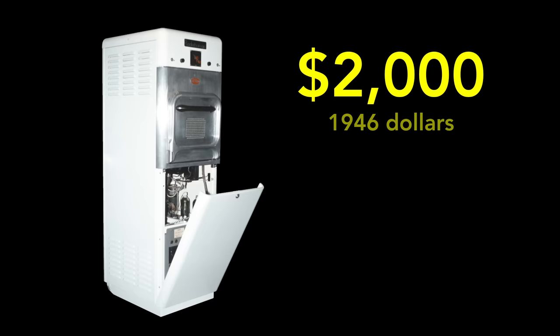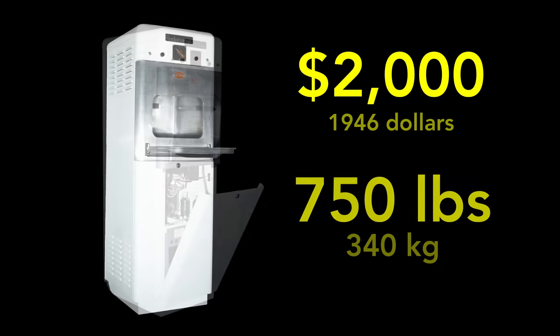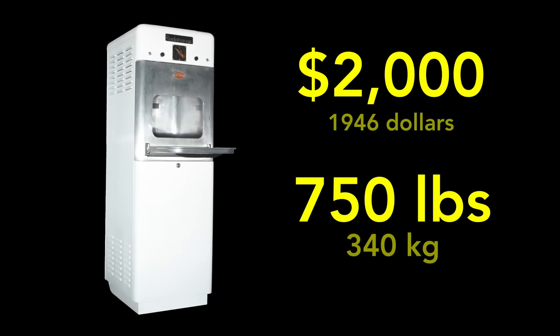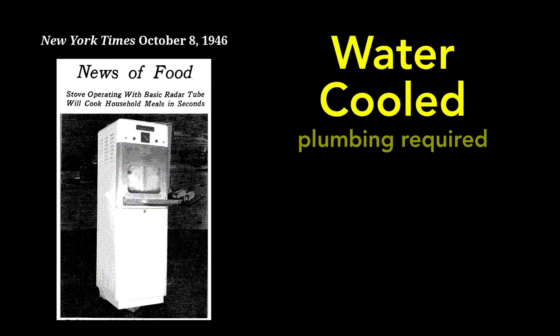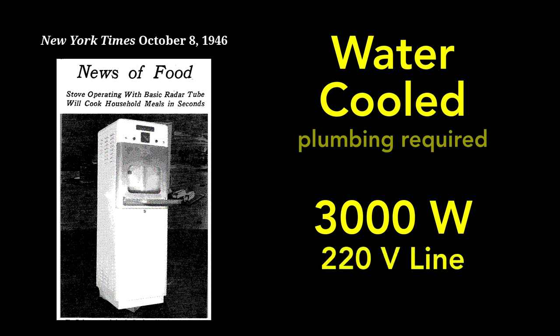This oven was filled with tubes and other electronics and weighed three or four times as much as today's conventional stoves. It was five feet tall with a comparatively tiny cooking chamber, and was water-cooled and so had to be plumbed into its location. This cooling was needed because it consumed 3,000 watts of power, four times a typical microwave oven today. Because of this high power, it had to be wired into a 220-volt line, like an oven or dryer.